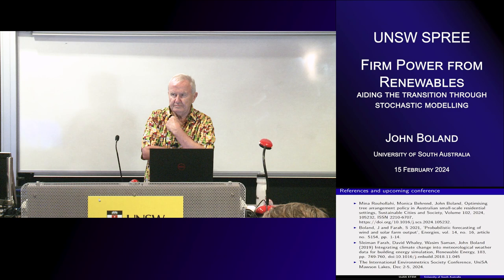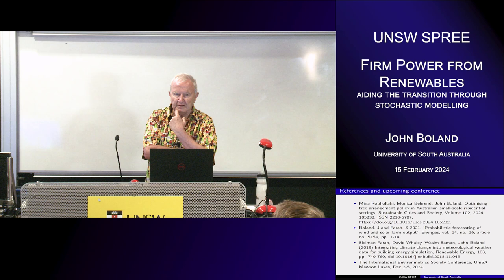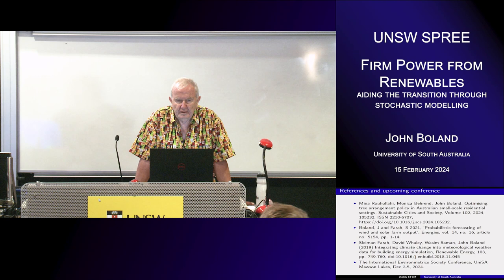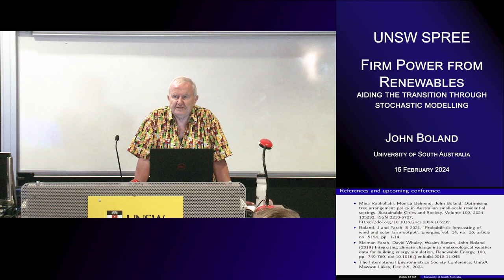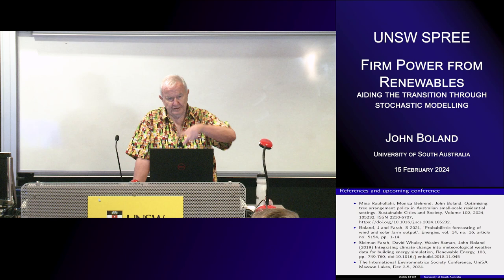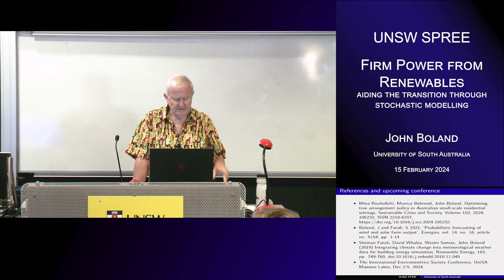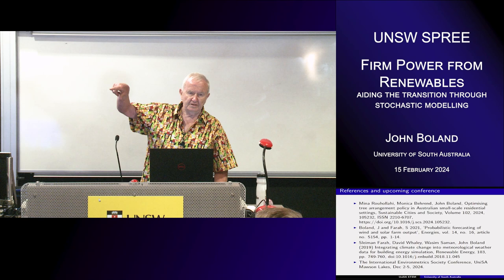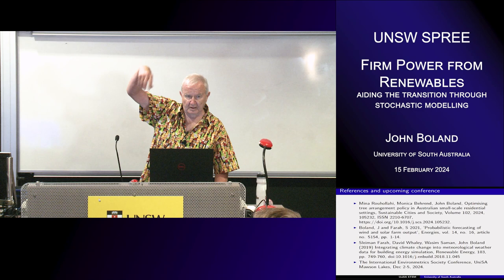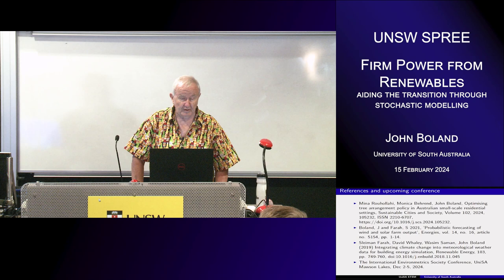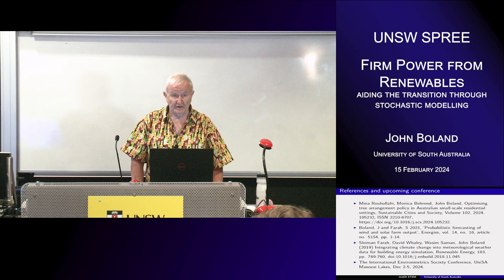Question: you mentioned overbuilding is more cost-effective than battery storage for firming. What would a 98% renewable energy system with firm power look like in Australia in terms of wind and solar percentages? Answer: one of the best places to look for the Australian application is the paper by Alona Ray Costa and Ben Elliston from UNSW — their 2023 paper goes into that quite specifically about the Australian situation. That would be a good starting point.